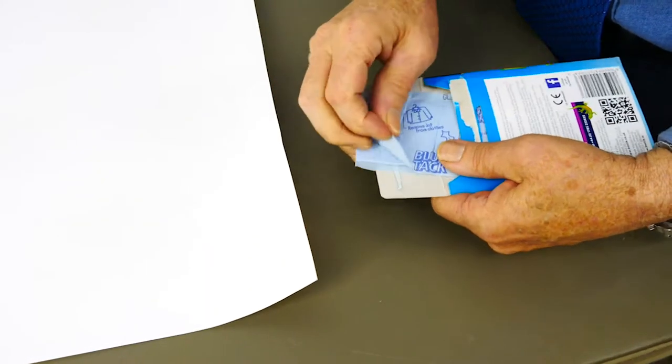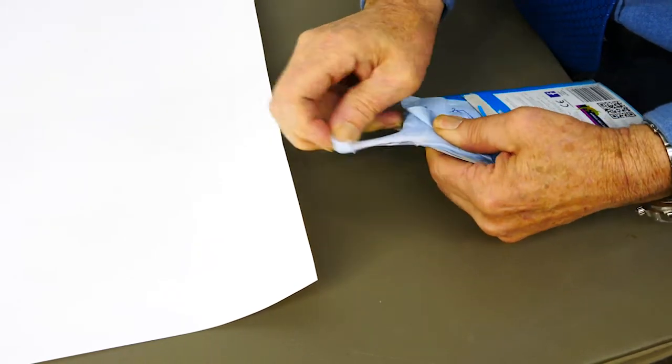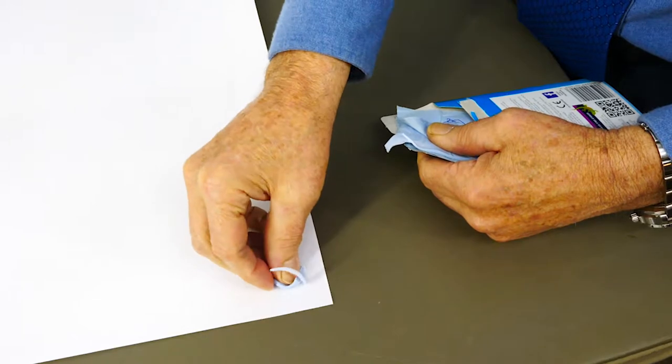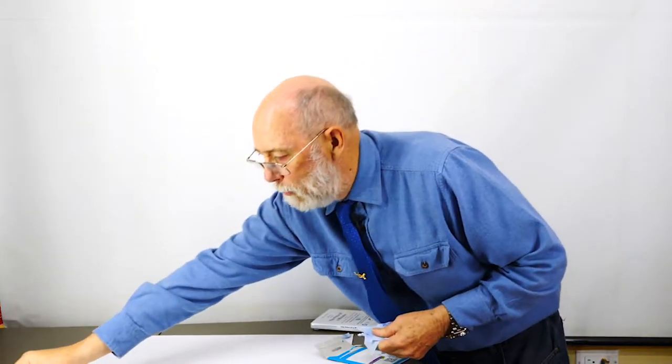Blu-Tac looks like this. You just stick it on, little piece here, each corner. There's enough in this pack that you can do probably at least 12 posters.